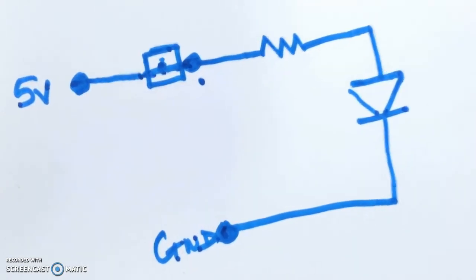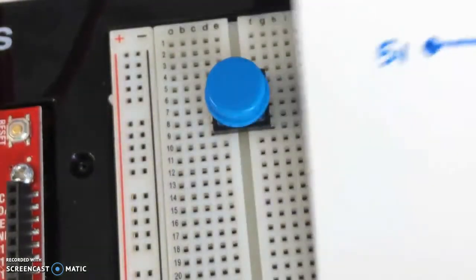I have the output of the switch so 5 volts is going to come on one side of the switch. I'm going to bring in this red wire.